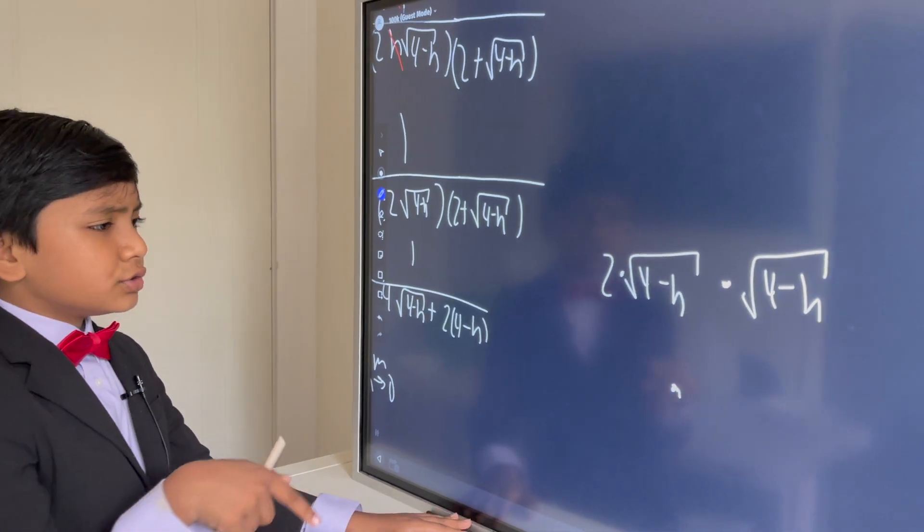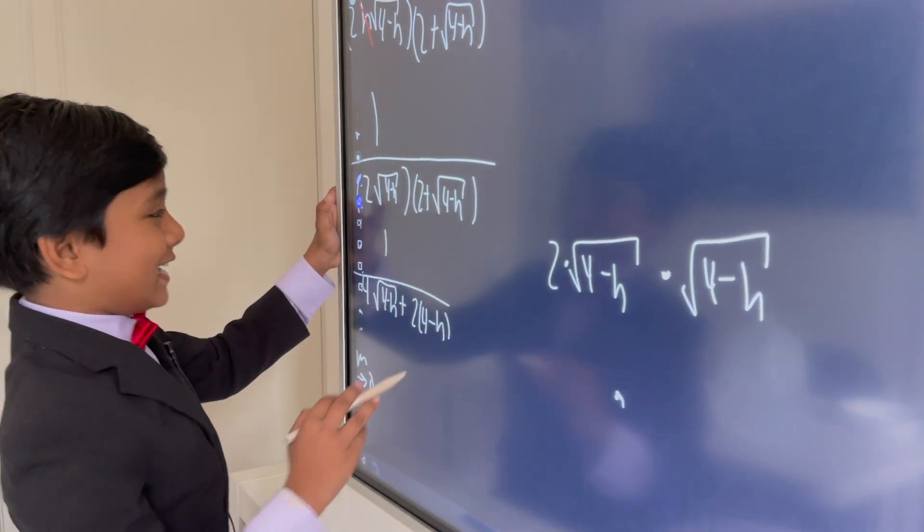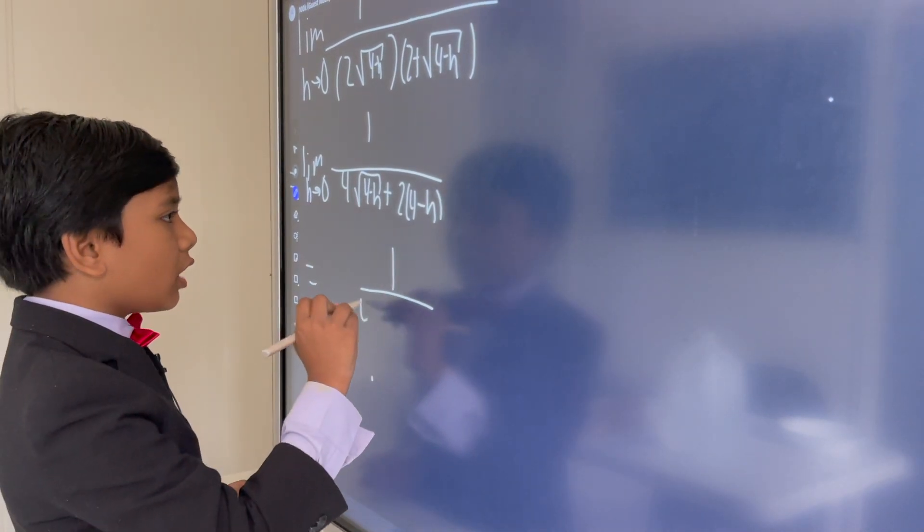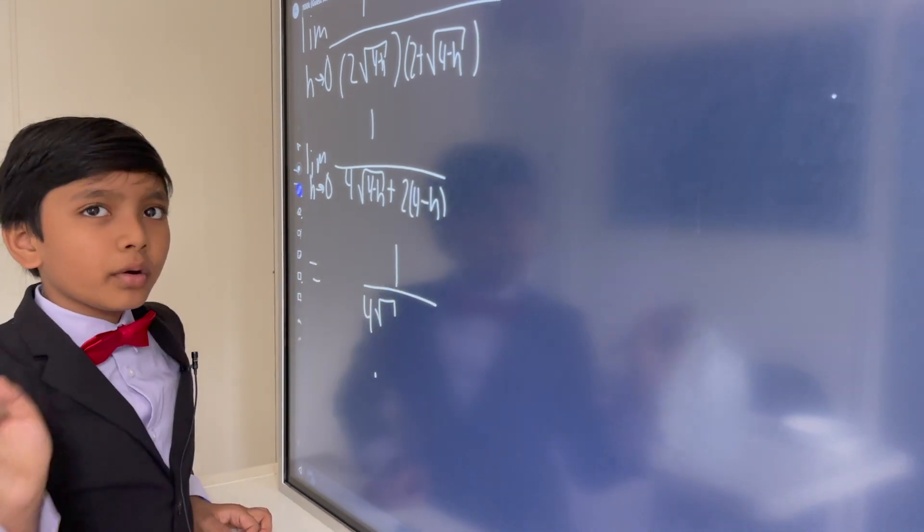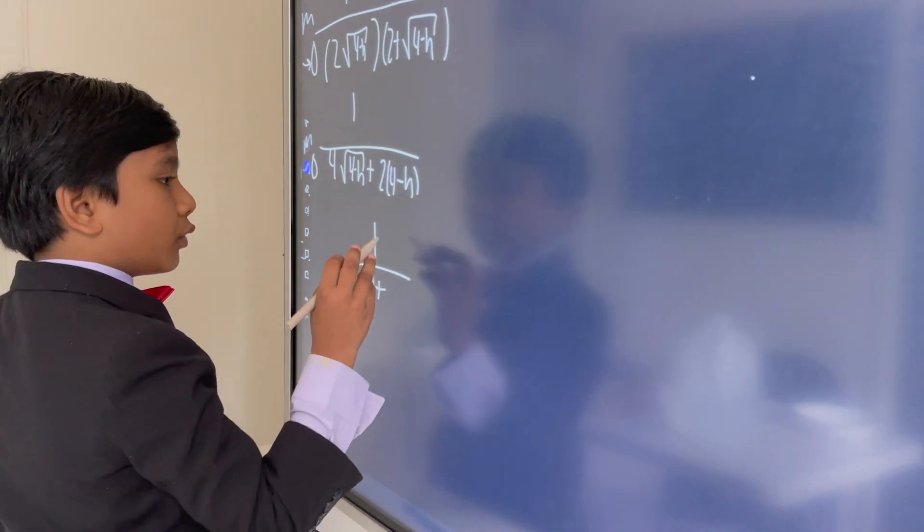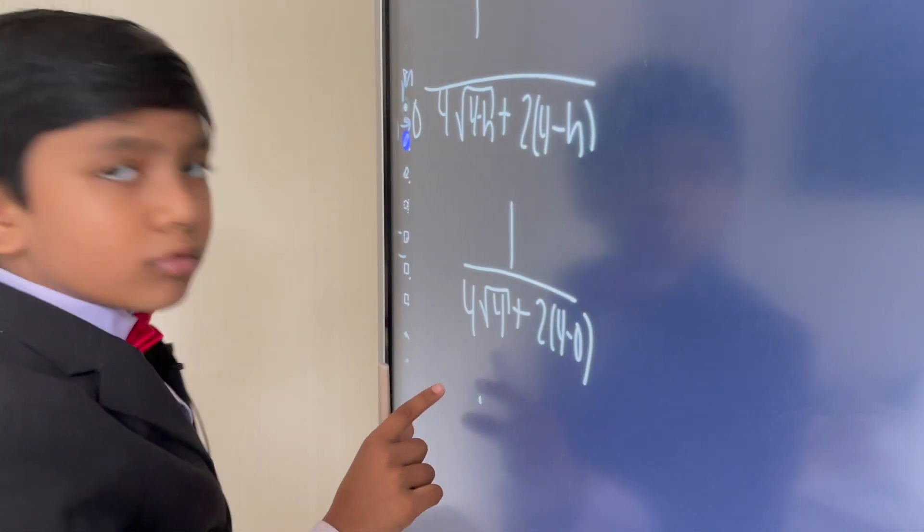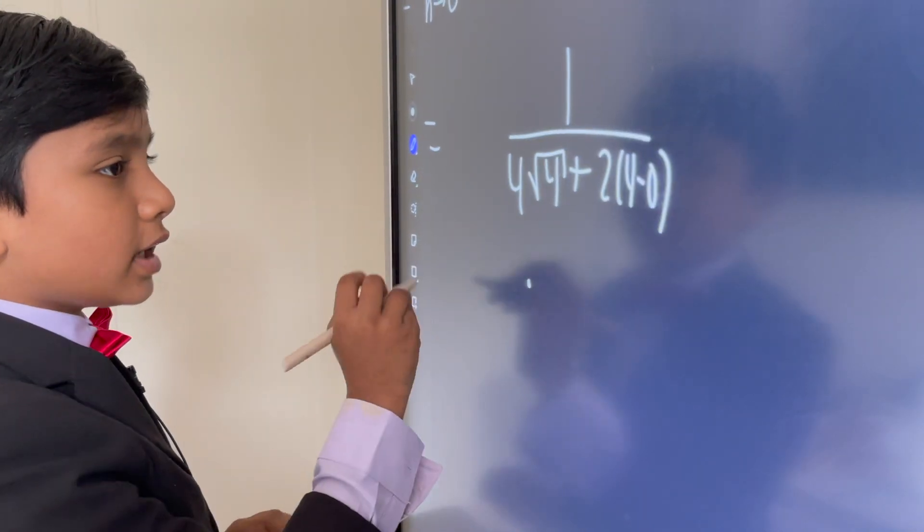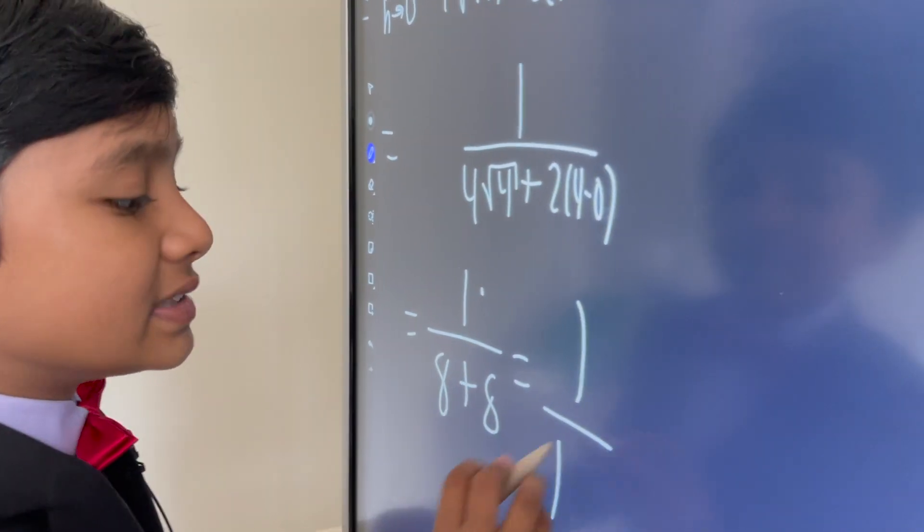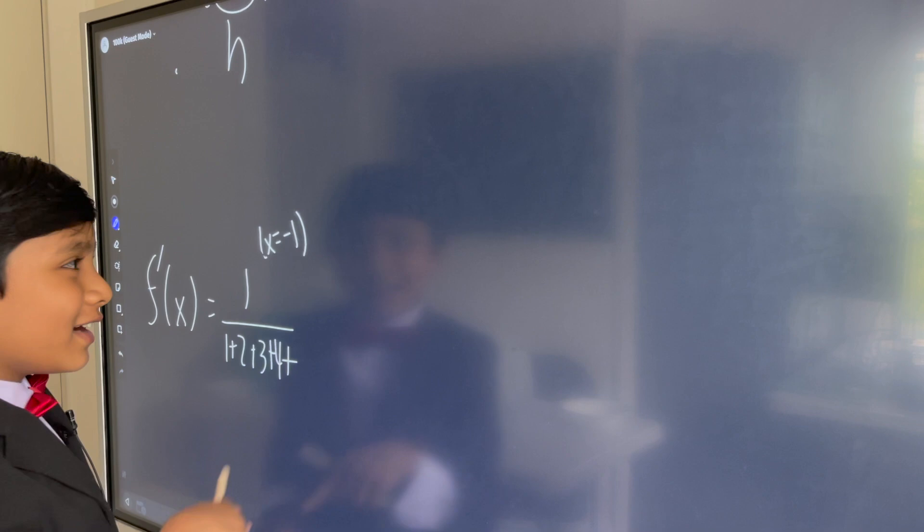2, 4 minus h times 2. And, well, that should be, yeah, I got it. I got this. Got this. So, 0. So, when we set h to 0, we get 4 times the square root of 4 minus 0 is still square root of 4, plus 2 times 4 minus 0. So, oh, sorry, sorry, sorry. But anyway, that gives us 1 over 4 times 2 is 8, plus 2 times 4 is 8, giving us 1 over 16, meaning that the derivative is 3 plus 4 plus, okay, I'm getting bored.